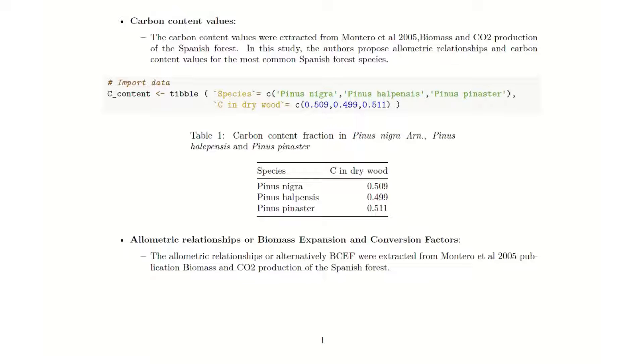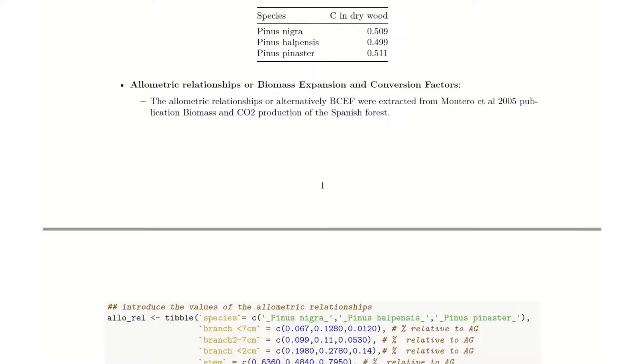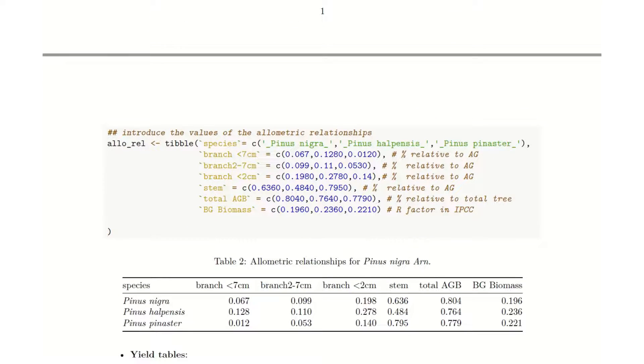In this case, the allometric relationships were extracted from the previous publication of Montero et al. 2005, Biomass and CO2 production of the Spanish forests. Again, you can find a snippet code in R to import the data that was gathered from the aforementioned publication.